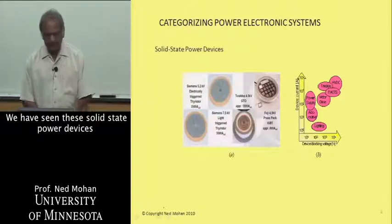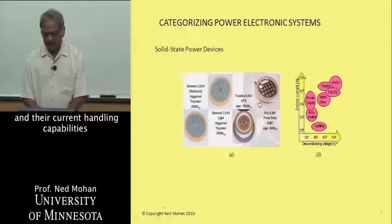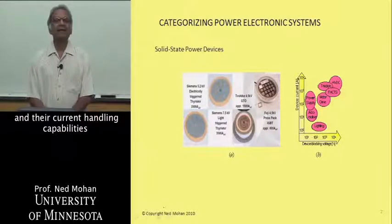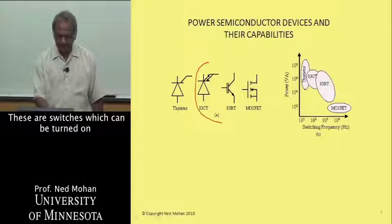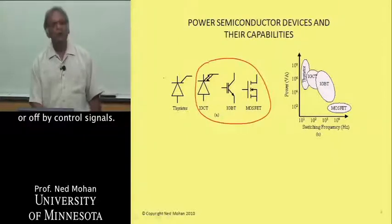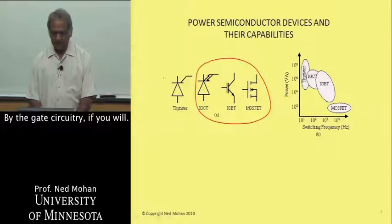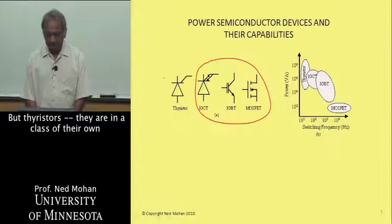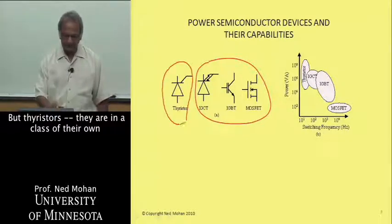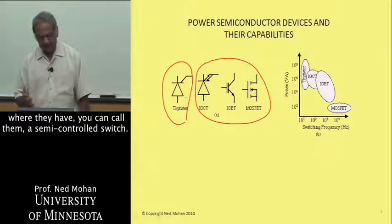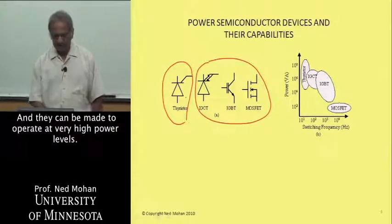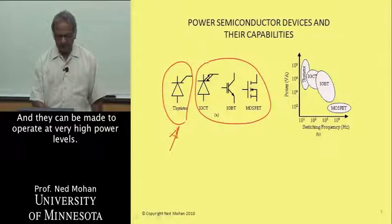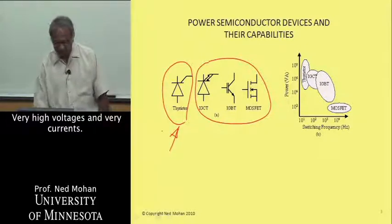Again, we have seen these solid-state power devices and their current handling capabilities and their blocking capabilities. The symbols are shown here. These are switches which can be turned on or off by control signals, by the gate circuitry. But thyristors are in a class of their own — you can call them a semi-controlled switch. They are not a fully controlled switch as such, and they can be made to operate at very high power levels, very high voltages and very high currents.